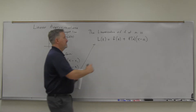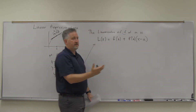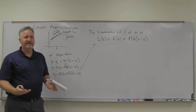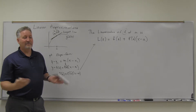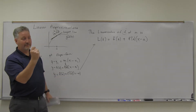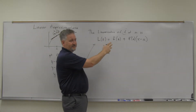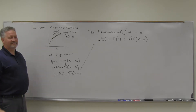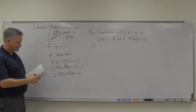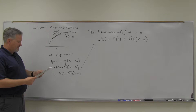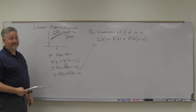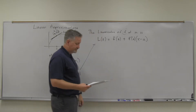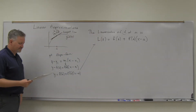So it's taking this function, which is not a line, and linearizing it — making it a line. But it's only good for points around a. How far can you get away from it? Well, it depends on the function. That's what this is — it is a formula. But it's really just the tangent line.